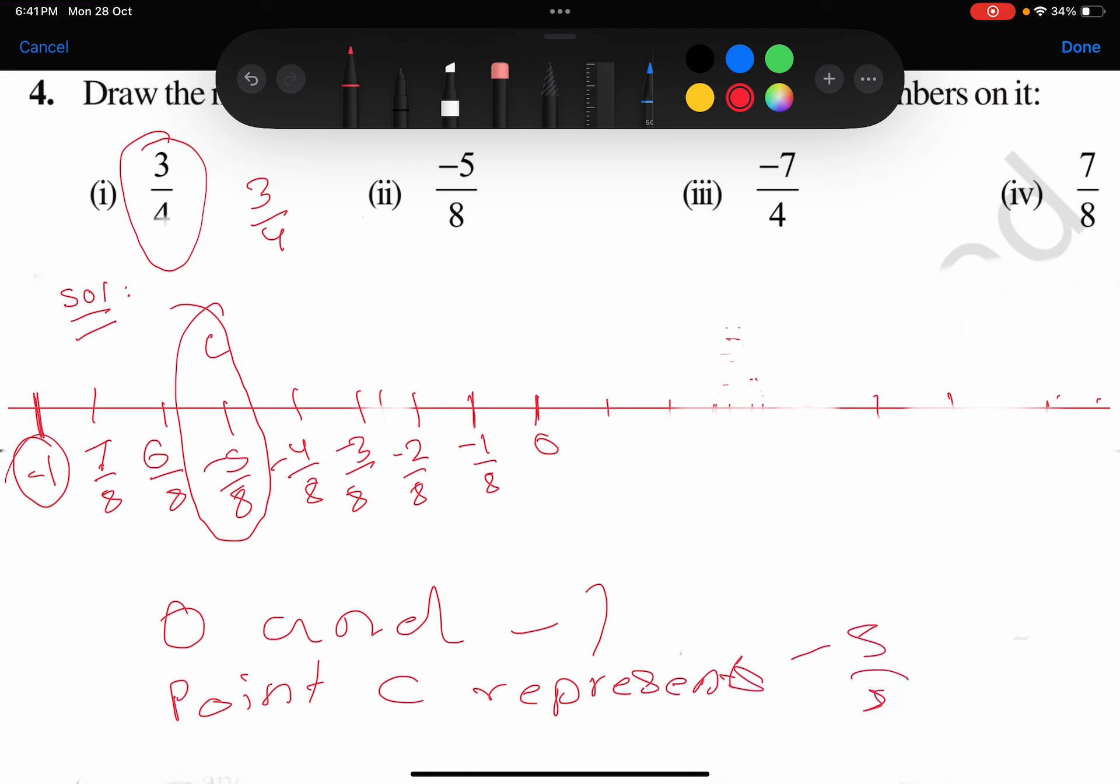Point C lies between 0 and minus 1. Point C represents minus 5/8. Sorry, my handwriting is bad. Now let's do the third one, easy peasy.